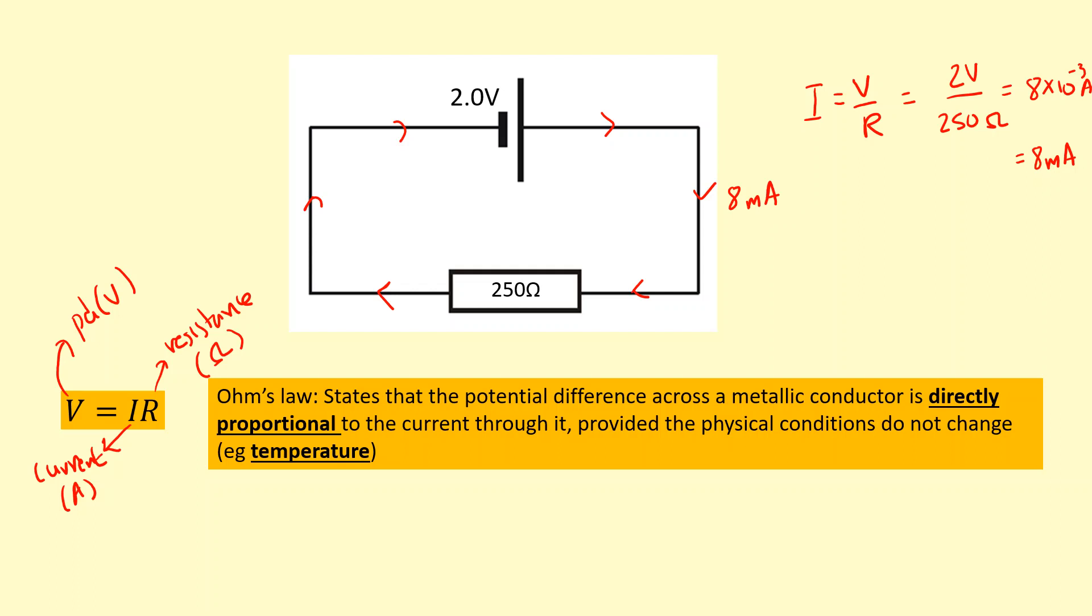So directly proportional means that if the potential difference doubles, the current will double. If the potential difference triples, the current will triple, and so on. So whatever factor the potential difference or current increases by, the other one will increase by the same factor. And this is only true if the physical conditions do not change.